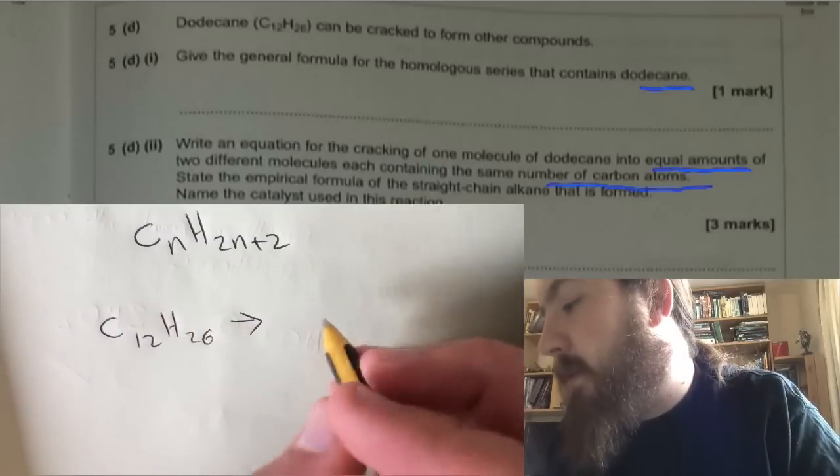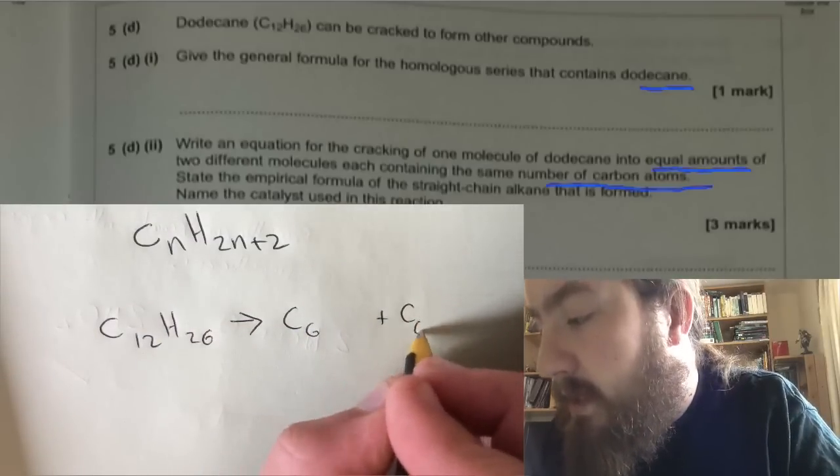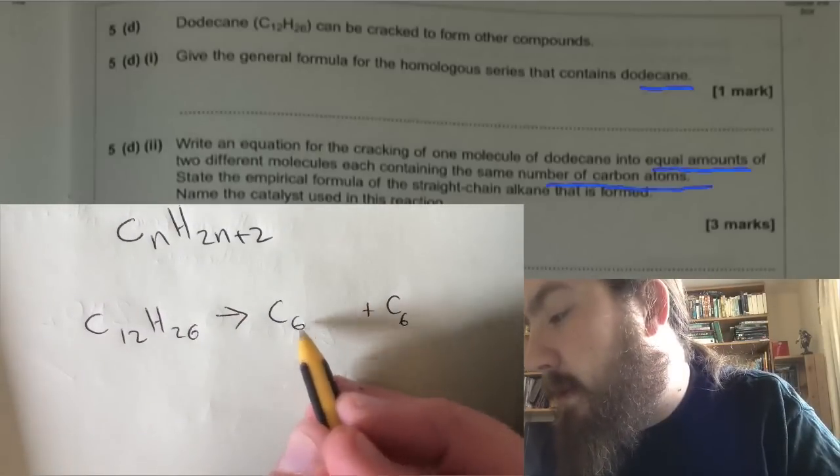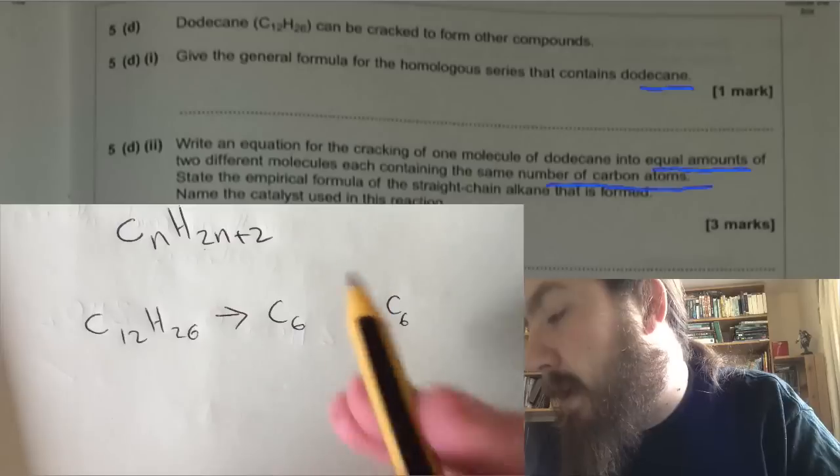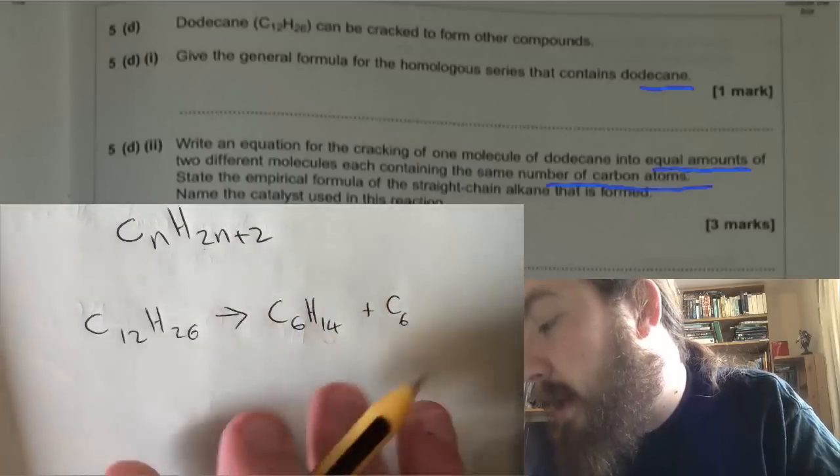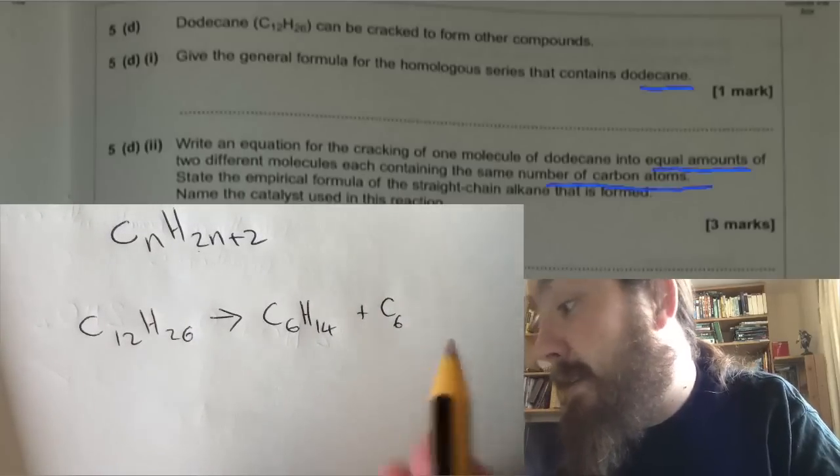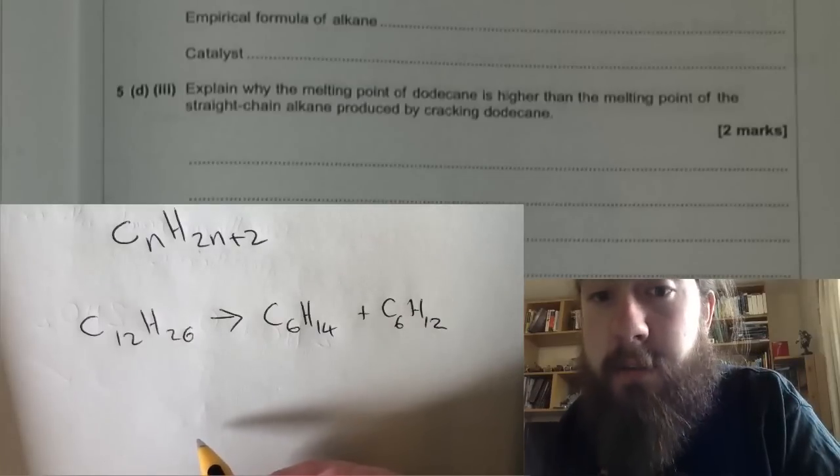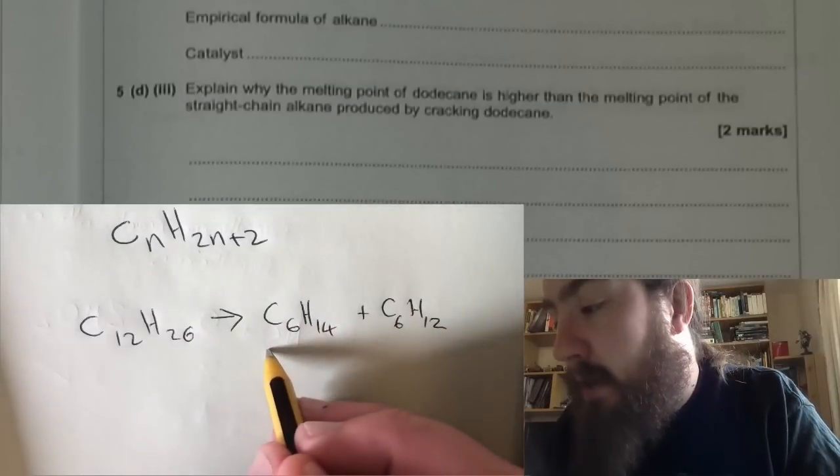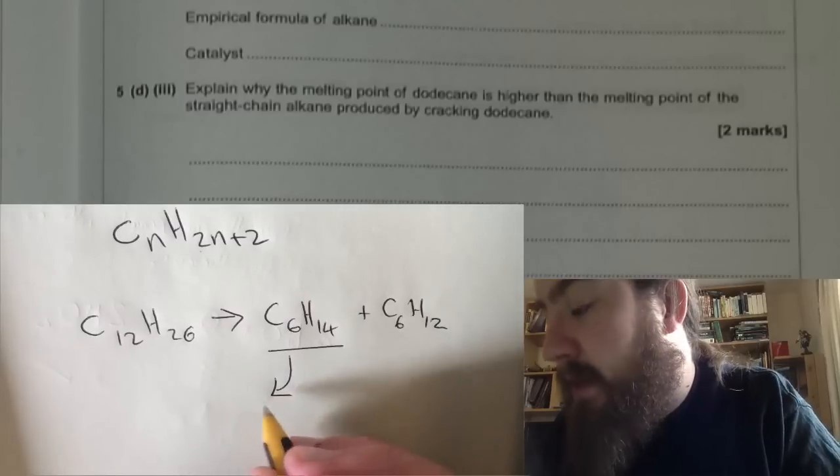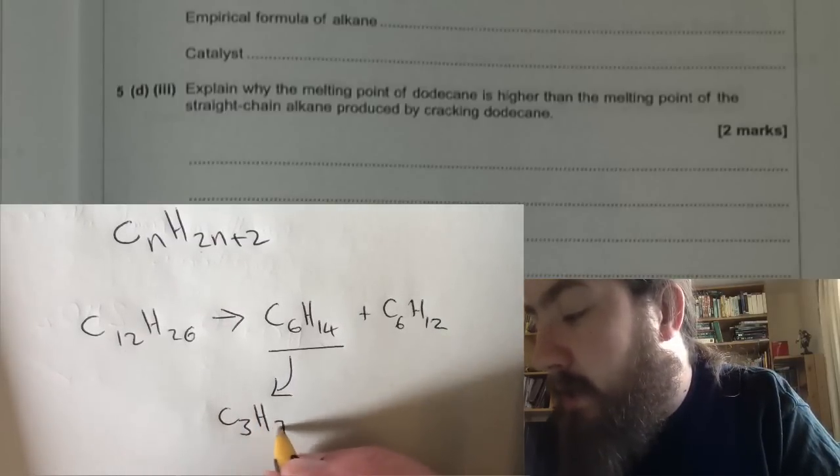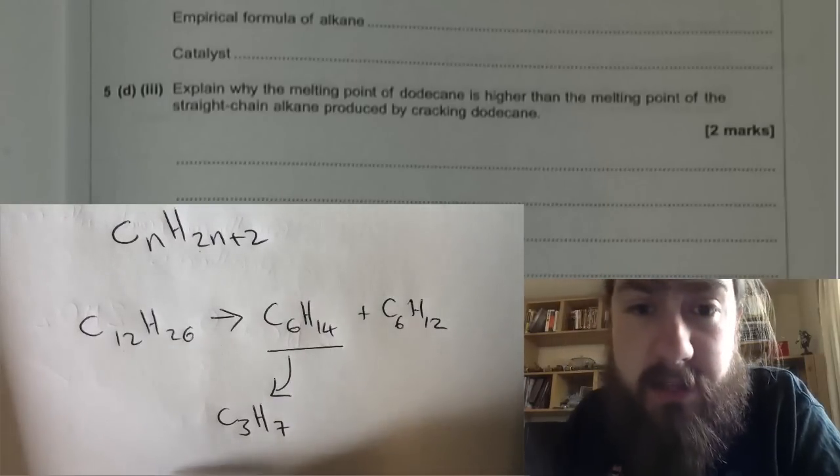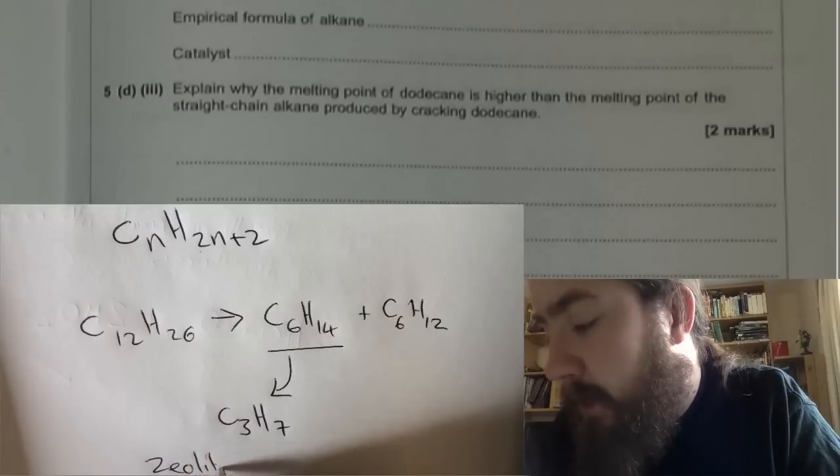It makes equal amounts with the same number of carbon atoms, so C12H26 gets broken down into two things. If it's got the same number of carbon atoms, the 12 gets broken down into two, so it would be C6 plus C6. One of these is going to be an alkane, so the alkane for C6, which is times six by two and add two, will be H14. The remainder is the alkene which will be C6H12. The empirical formula of the alkane C6H14 is C3H7. The catalyst that will be used in this reaction will be a zeolite catalyst.